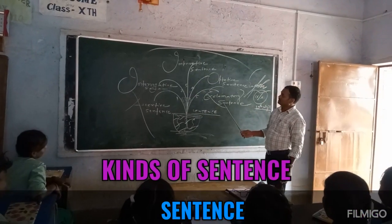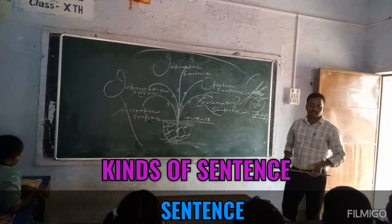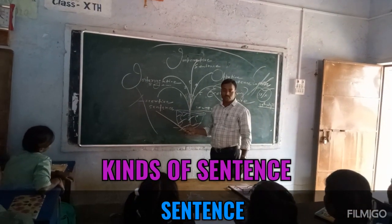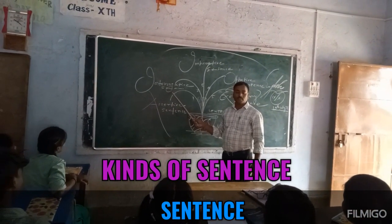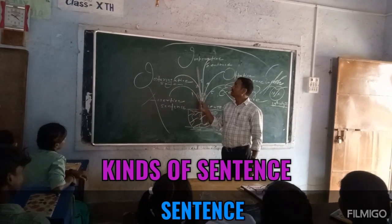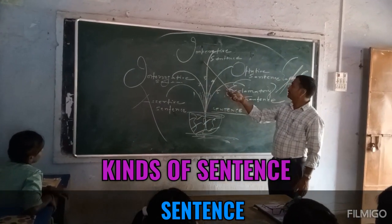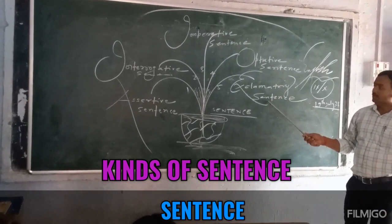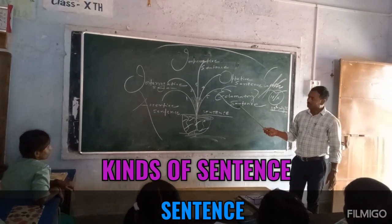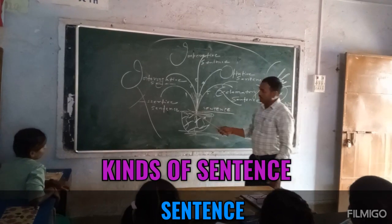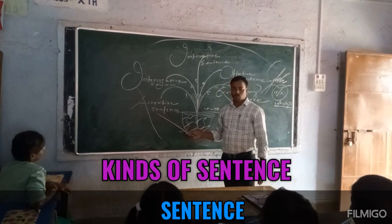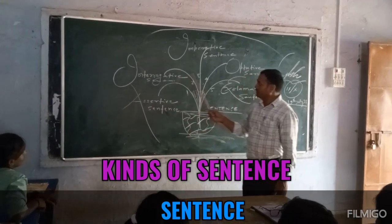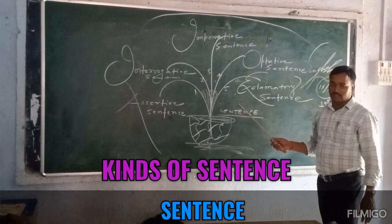There are five kinds of sentences: assertive sentence, interrogative sentence, imperative sentence, optative sentence, and exclamatory sentence. Every student should know the uses of these five sentences.